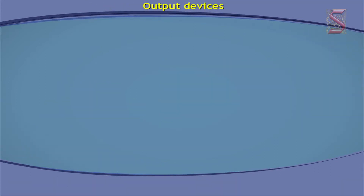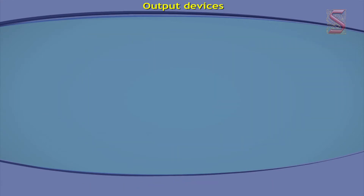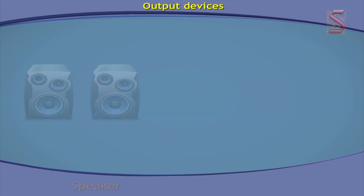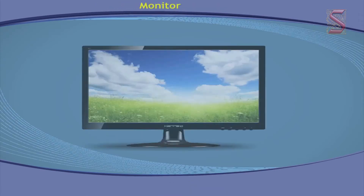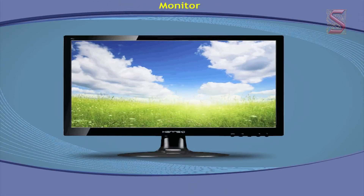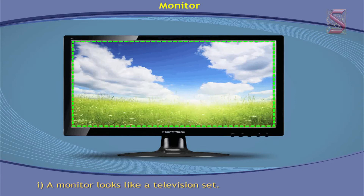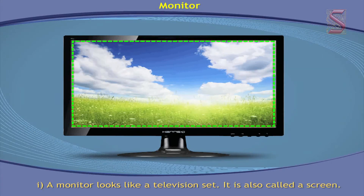The important output devices are Monitor, Printer, and Speaker. A monitor looks like a television set. It is also called a screen.